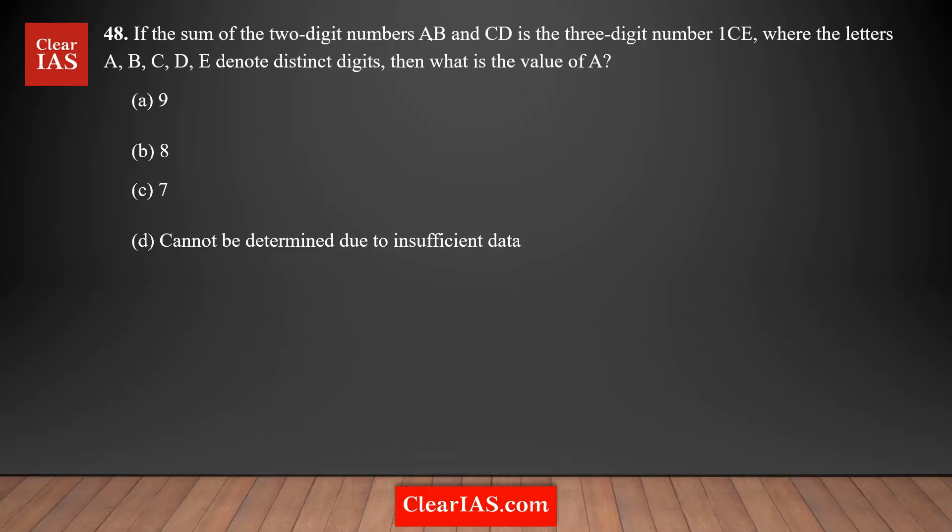The sum of two-digit numbers AB and CD is the three-digit number 1CE. So what we have given is a two-digit number AB. You are adding with this two-digit number CD.